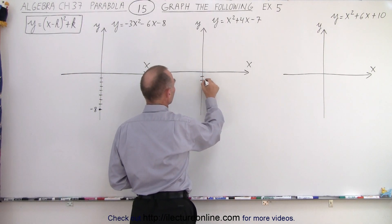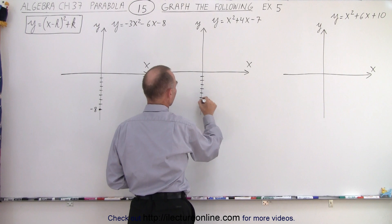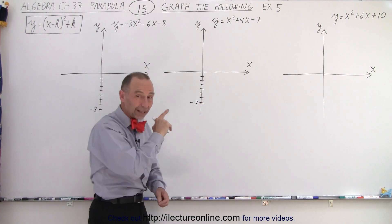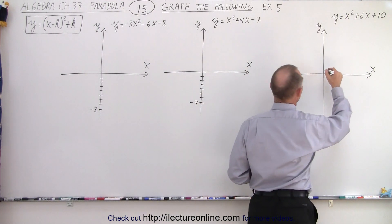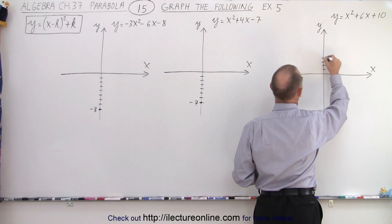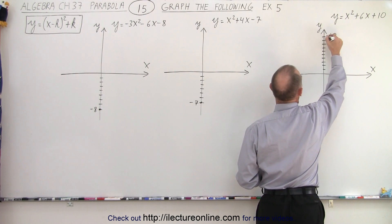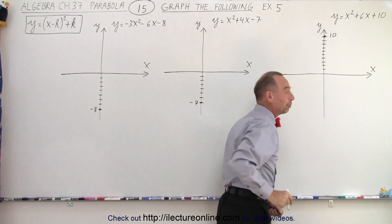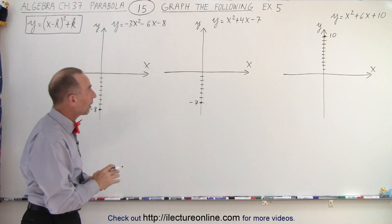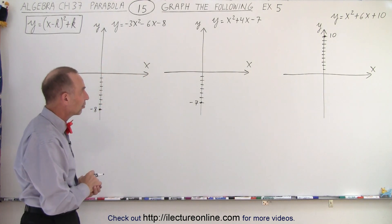Over here it's negative 7. So we know that the parabola will go to that point. And here it's plus 10. We know that the parabola will go to that point. So you already right away know where the parabola will cross the y-axis.